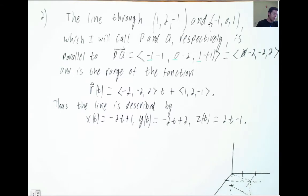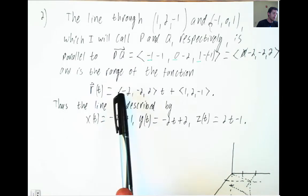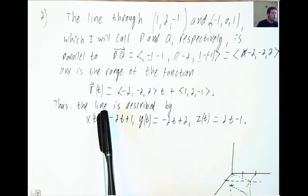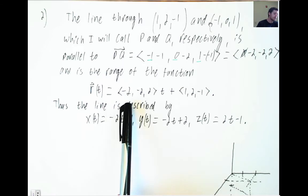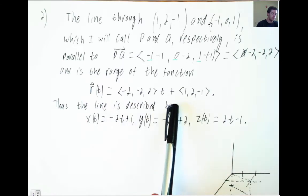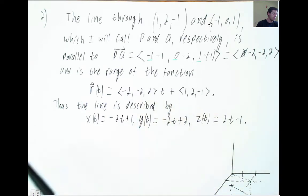Okay, so that line is parallel to P and is the range of the function R, with this rule of correspondence: R(t) is <-2, -2, 2> times t, plus <1, 2, -1>. That's the initial point and some multiple of the direction.